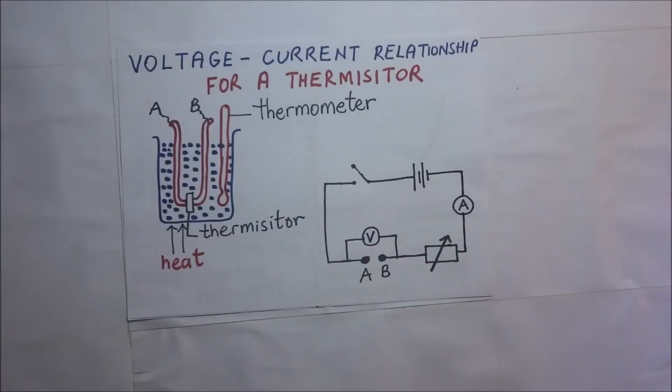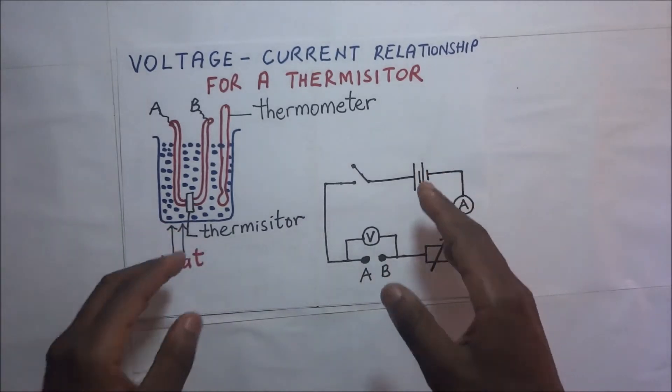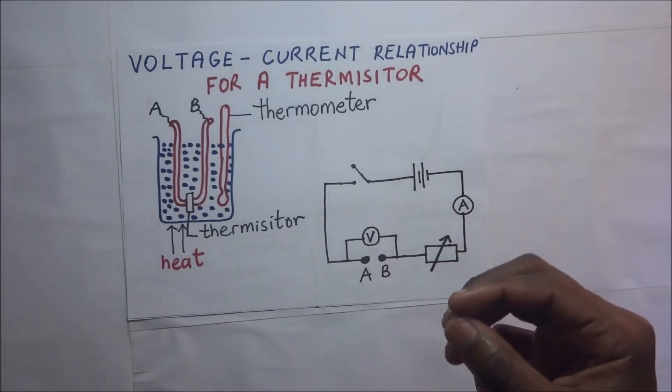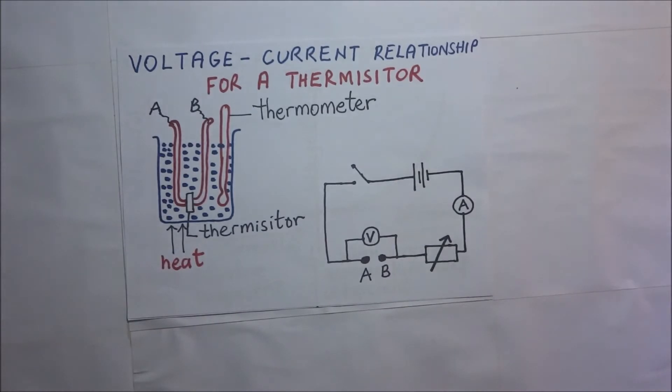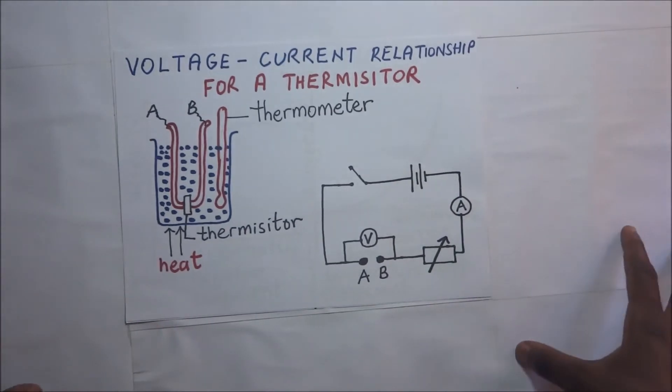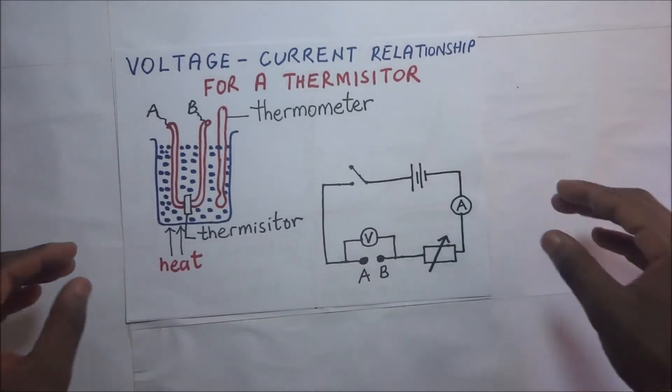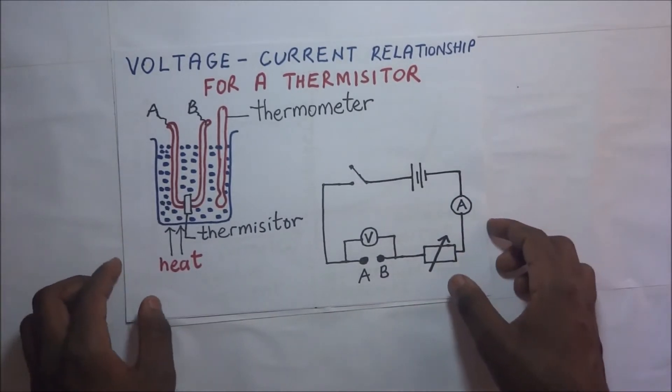All ohmic conductors such as nichrome and constantan wire have a linear relationship. By that, I mean that when their voltage increases, the current also increases. That is, voltage is directly proportional to current. However, when it comes to other materials like the thermistor, the relationship between voltage and current is not linear. Right now, I am going to draw a description of an experiment that demonstrates the voltage-current relationship of a thermistor.